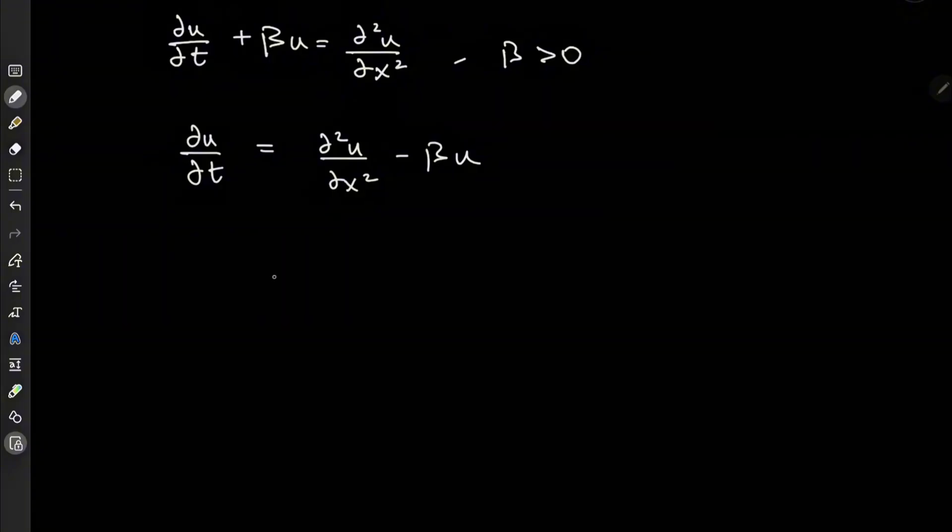For example, if I have some kind of rod, then this extra beta times u term represents some kind of lateral heat loss that is taking place.